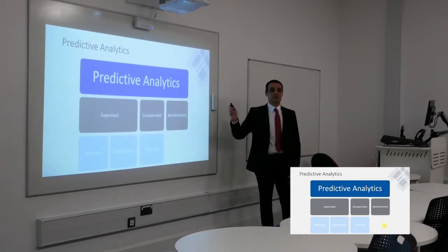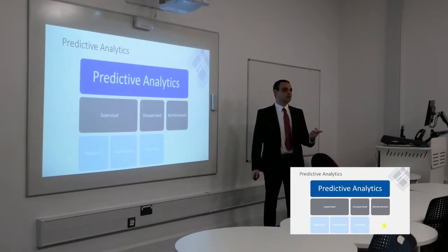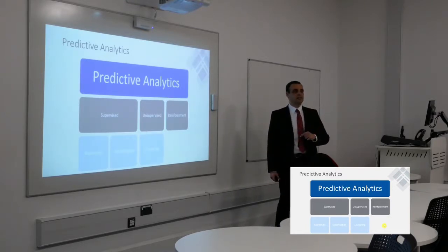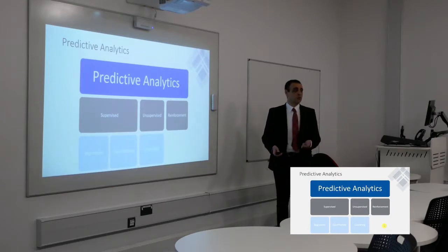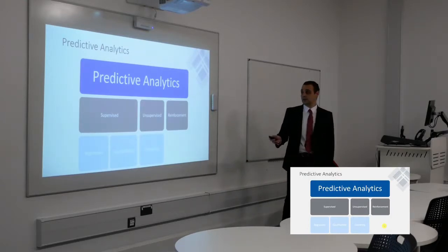Classification also works in structured data. There's a 0/1 classification where you can predict, say, whether a project will finish on time or not — if it's going to finish on time it reports true, if not, it reports false, giving you a precision value.